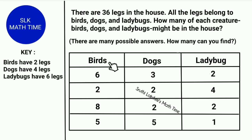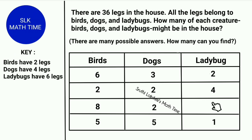One combination is 6 birds, 3 dogs, and 2 ladybugs. Another is 2 birds and 4 ladybugs. The next one is 8 birds, 2 dogs, and 2 ladybugs. The last one is 5 birds, 5 dogs, and 1 ladybug.